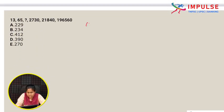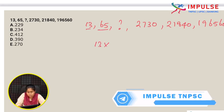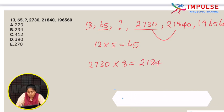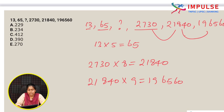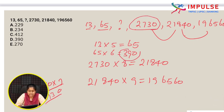Next question: 13, 65, ?, 2730, 21840, 196560. Looking at the pattern: 65 × 6 = 390. Then 390 × 7 = 2730. So the missing number is 390. Option D.